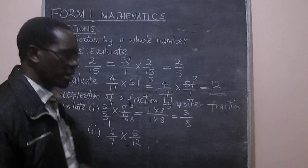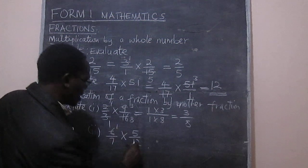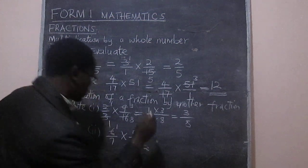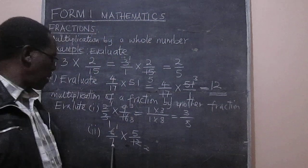But the easier way would be we divide here by 6 to get 1 and here by 6 to get 2. And then we multiply the numbers in the numerator and the numbers in the denominator.